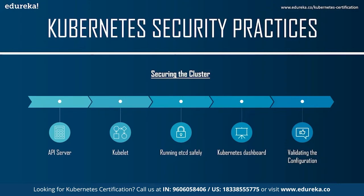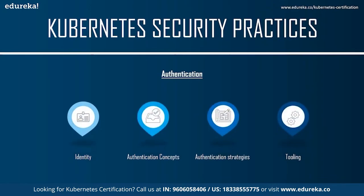Now let's move on to the second Kubernetes security practice: authentication. If you've used public cloud offerings such as AWS, Microsoft Azure, or Google Cloud Platform, you may have come across identity and access management (IAM), which allows you to define access to resources for users and services. All components — such as a kubelet running on a node or users issuing kubectl commands — need to communicate with the API server, which first has to verify the identity of the caller, i.e., authenticate the caller.